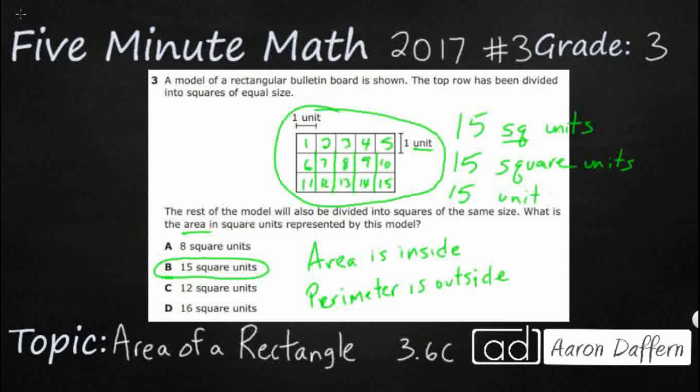And then we can also write—this is kind of an interesting one, but you'll see it as you get older—with an exponent. You're going to write the unit, and then you put that little 2 up there. That's an exponent, and that means squared. So all three of these say the same thing: 15 square units or 15 units squared. Now that's the area.